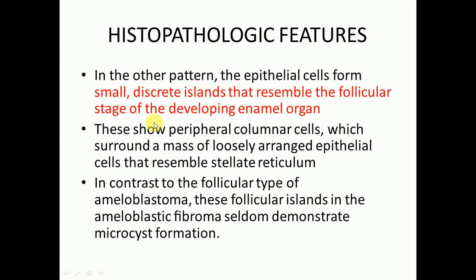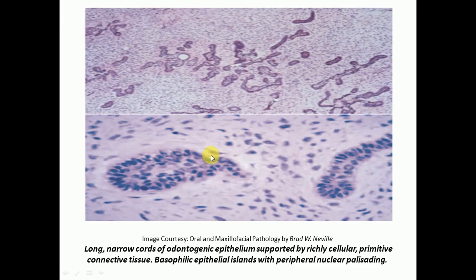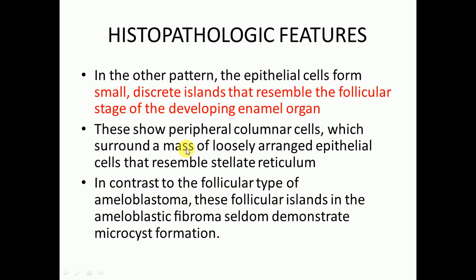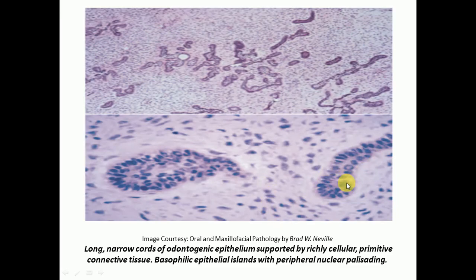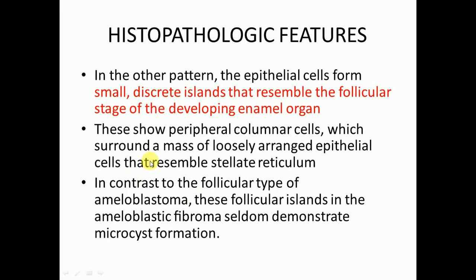In the other pattern, the epithelial cells form small discrete islands that resemble the follicular stage of the developing enamel organ. Here we have basophilic epithelial islands with peripheral nuclear palisading — the nuclei are parallel to each other. These show peripheral columnar cells surrounding a mass of loosely arranged epithelial cells that resemble stellate reticulum.